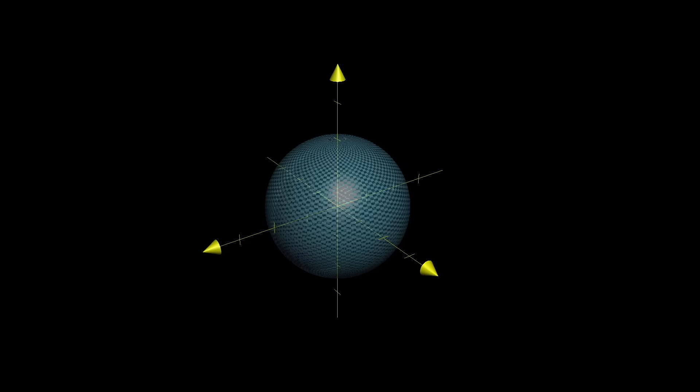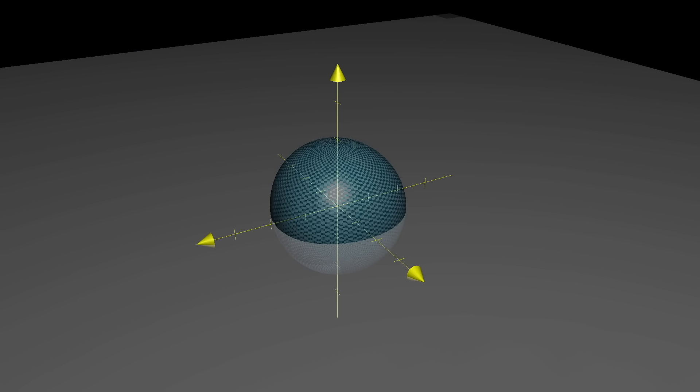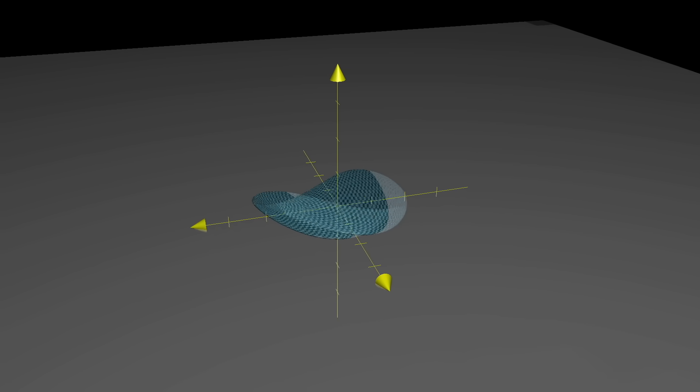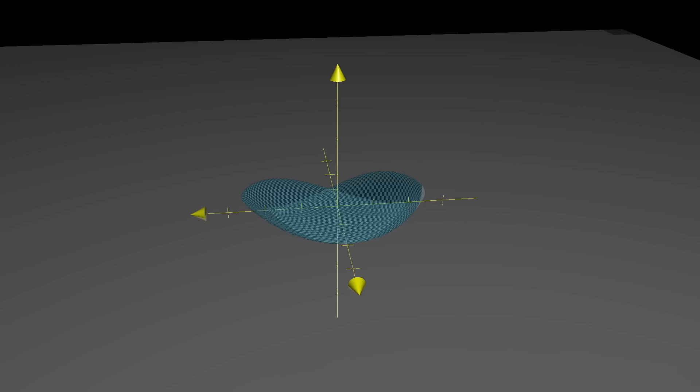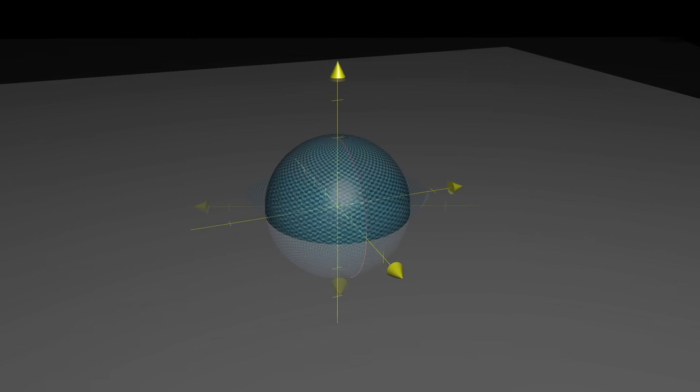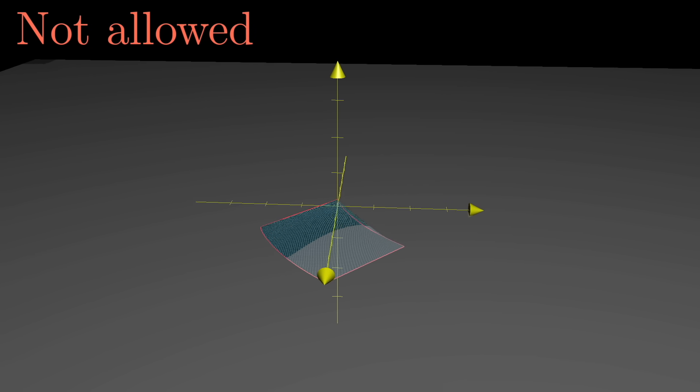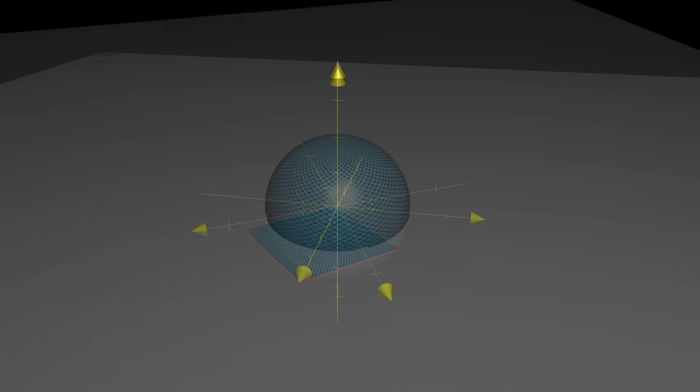Imagine taking a sphere in 3D space and squishing it somehow onto the 2D plane, stretching and morphing it however you'd like to do so. The only constraint I'll ask is that you do this continuously, which you can think of as meaning never cut the sphere or tear it in any way during this mapping.